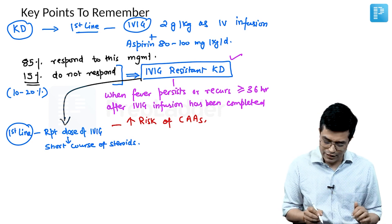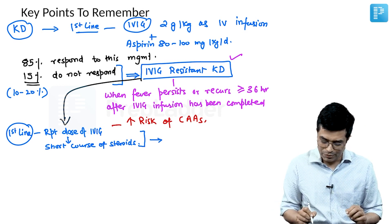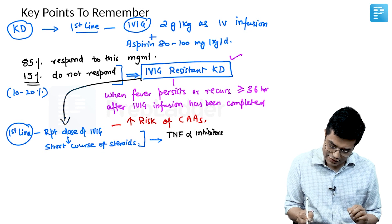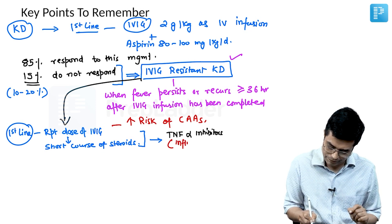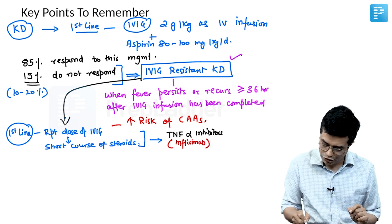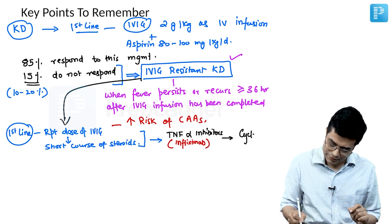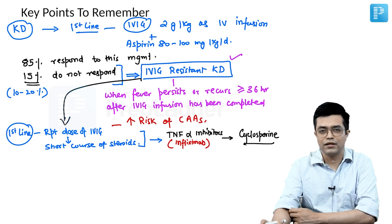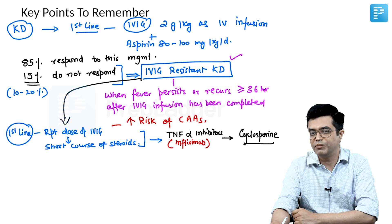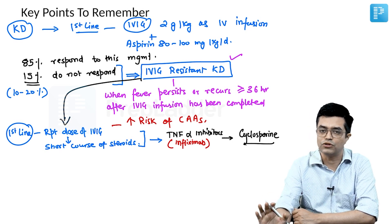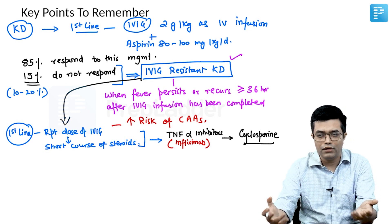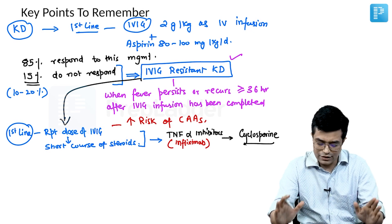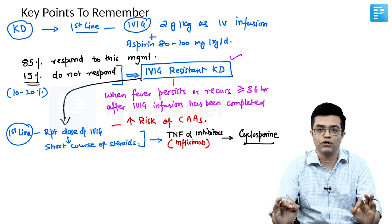If there is no response, the patient is deteriorating, or echocardiographic changes are seen, you move to the next line of management. The second-line therapy after repeat IVIG and steroids is use of TNF-alpha inhibitors — specifically infliximab, which has been extensively studied. If there is no response to infliximab, you can give a trial of cyclosporine. Importantly, cyclophosphamide has not been found to be effective in IVIG-resistant Kawasaki disease and has no role in management. For off-label severe cases, plasmapheresis or other immunosuppressive agents may be tried.